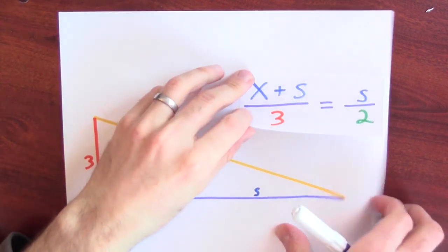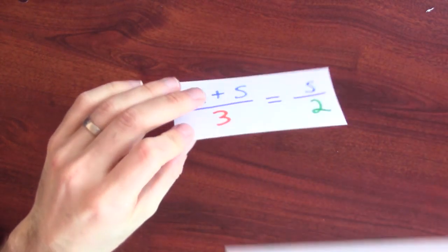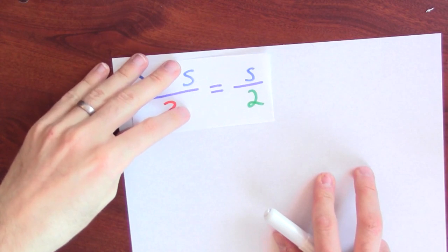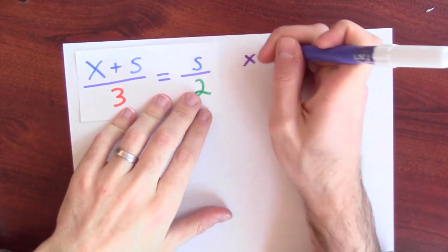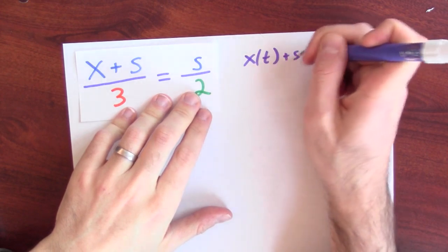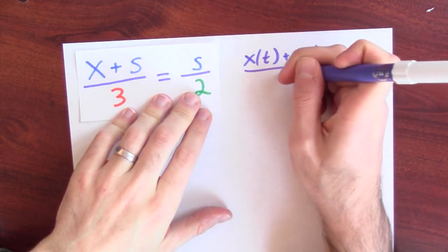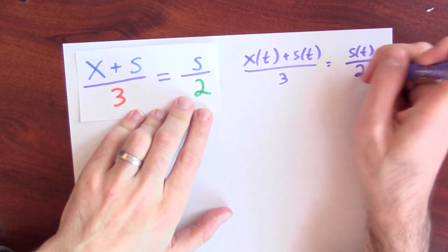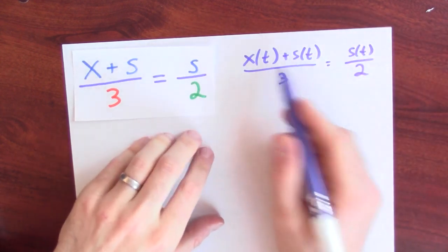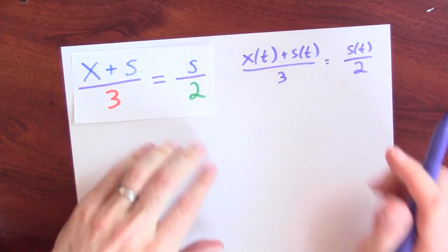With an equation in hand, we can now differentiate. Thinking of my position and the shadow's length as a function of t, I could rewrite this equation as, say, x of t plus s of t divided by 3. Equals s of t divided by 2, right? My position is a function of time and my shadow's length is a function of time.